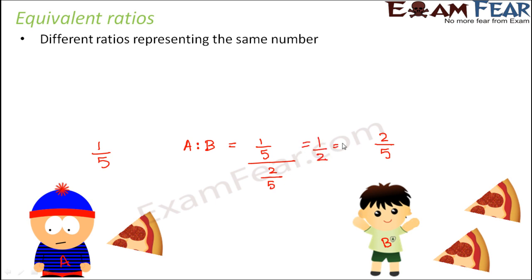So this is equal to 1/2, which is equal to 1 is to 2. So this would be the ratio of pizza eaten by A to B. So that is 1 is to 2.